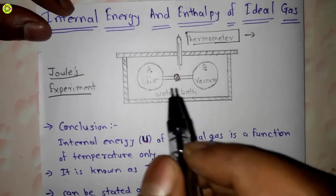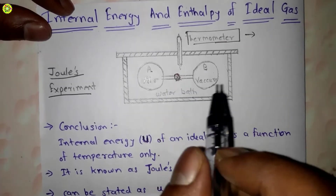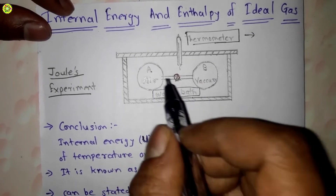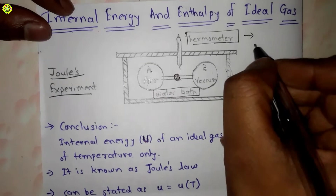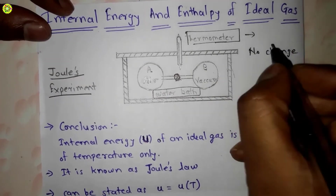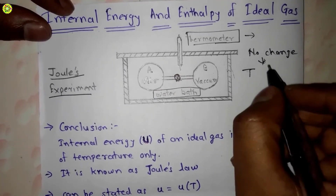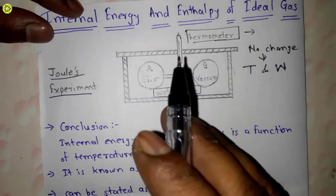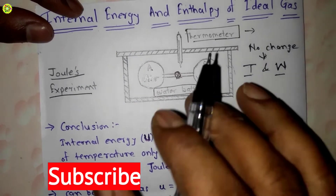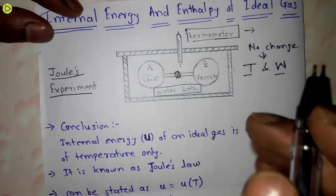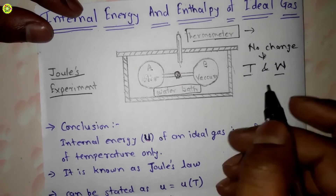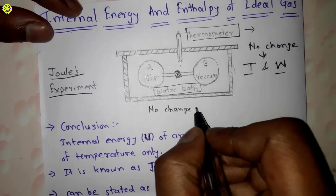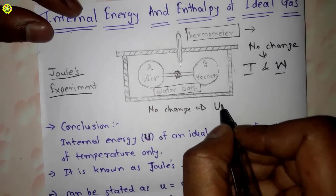Now we open the valve and allow the free expansion of air from tank A to tank B. During this process there is no work transfer. Joule observed that during this free expansion process there is no change in the temperature of the water inside the insulated tank.